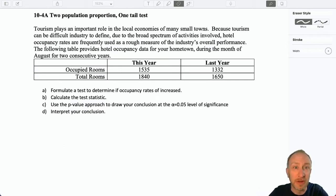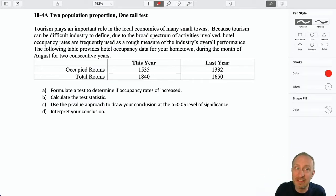Tourism plays an important role in the local economies of many small towns. Because tourism can be a difficult industry to define, we'll often use hotel occupancy rates as a rough measure of the industry's overall performance. The following table provides hotel occupancy data for your hometown during the month of August for the past two consecutive years. Formulate a test to determine if occupancy rates have increased. You're not going to be told exactly what kind of test you're supposed to be doing. You'll have to figure that out for yourself.